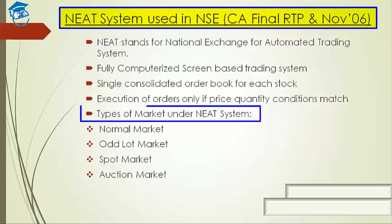If I talk about the markets, what are the different types of markets covered under this NEAT system? There are four: number one, normal market; then comes odd lot market; then spot market; and finally, auction market.